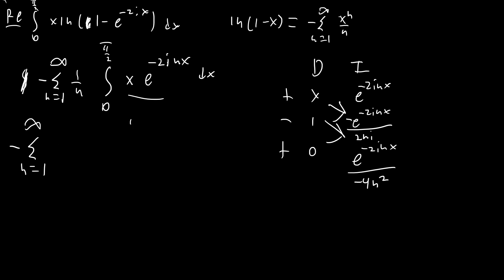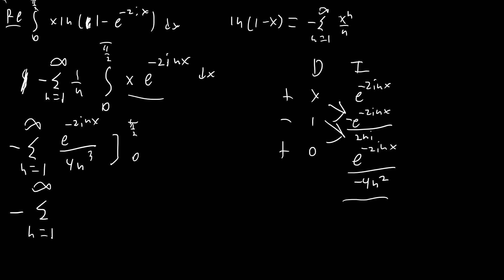We're only going to worry about the other part of the integral. That's going to give e^(−2inx) / (4n³), since the negative signs cancel and we incorporate the 1/n factor. Evaluated at π/2 and 0, we get the sum from n = 1 to infinity: at π/2 this is e^(−iπn) = (−1)^n, which you can easily verify. So we have (−1)^n / (4n³) minus 1/(4n³) at 0.